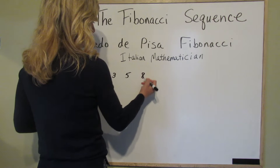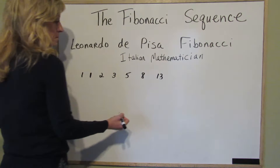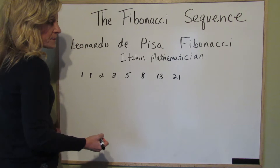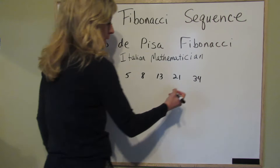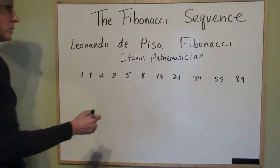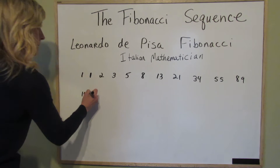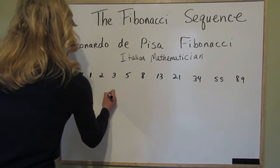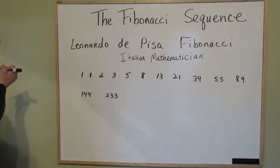5 plus 3 is 8. 8 plus 5 is 13. 13 plus 8 is 21. 21 plus 13 is 34. 34 plus 21 is 55. 55 plus 34 is 89. I'll put a few more numbers up here for you. So 89 plus 55 is 144. And then 89 plus 144 is 233. And then 233 plus 144 is 377.